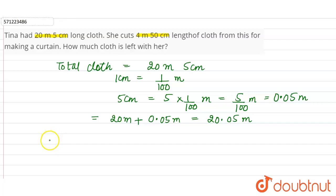Used cloth will be equal to 4 meter 50 centimeter. Again, 1 centimeter is equal to 1 by 100 meter. So 50 centimeter will be equal to 50 into 1 by 100 meter.